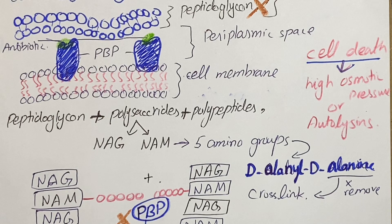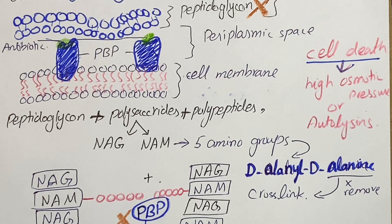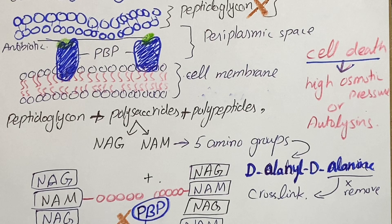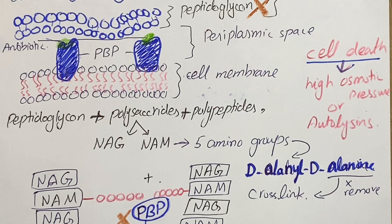Resistance against these antibiotics can be developed through different mechanisms. In certain cases there is development or formation of beta-lactamase, which is an enzyme responsible for the destruction of the beta-lactam ring of these antibiotics, ultimately rendering them useless. A second mechanism of resistance can be alteration in penicillin-binding proteins. When there is alteration in PBPs, there will be no binding of antibiotics to these proteins, causing no inhibition of transpeptidation, so the process will go on and the antibiotics will have no effect.